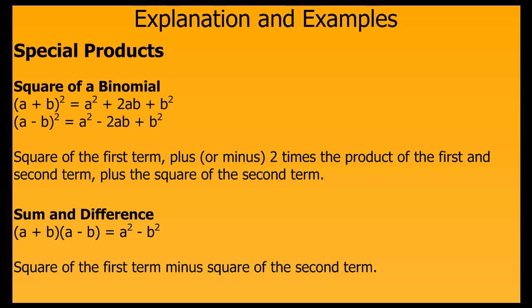There's a third special product: sum and difference. If we have the quantity a plus b times the quantity a minus b, it will always work out to be a squared minus b squared — the first term squared minus the second term squared.